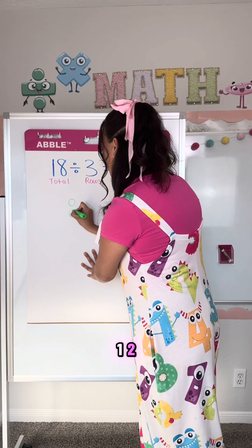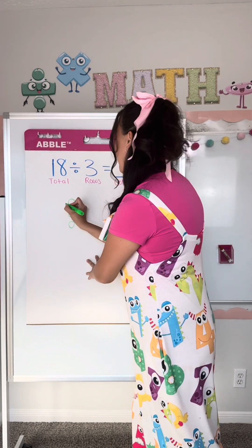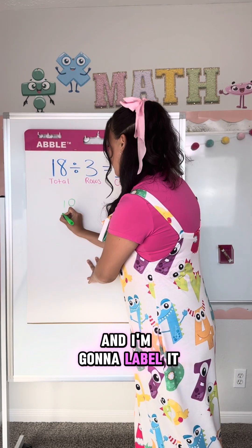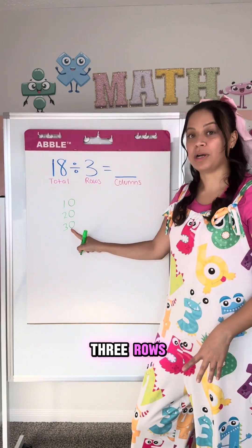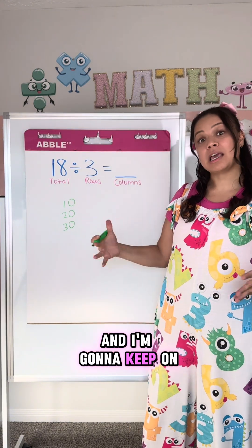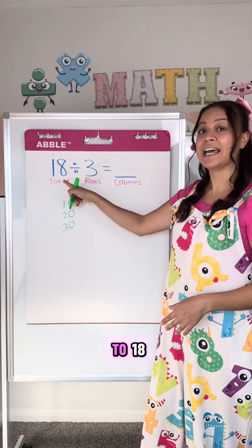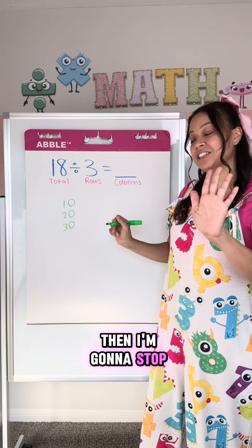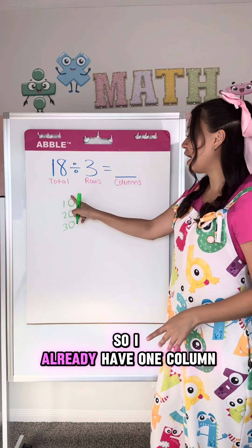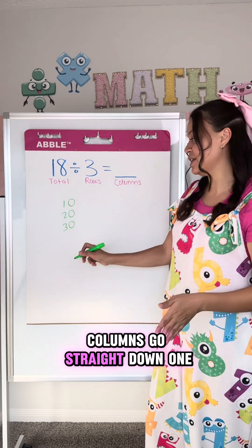One, two, three. And I'm going to label it: three rows. And I'm going to keep on adding columns until I get to 18, which is the total, and then I'm going to stop. So I already have one column. Columns go straight down.